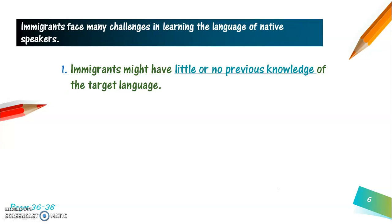Let's think about countries that are common destinations for immigrants from the Middle East. Other than countries like Canada, the United States, and Australia — where the dominant language is English — or countries like France, where the dominant language is French (both languages taught in Lebanon as second languages) — there are countries like Germany, Spain, Italy, Russia, Sweden, the Netherlands, Brazil, Argentina, and so on, whose dominant language is neither Arabic, nor French, nor English. From experience, we know that these people face a lot of difficulties in acquiring the language of the host country.